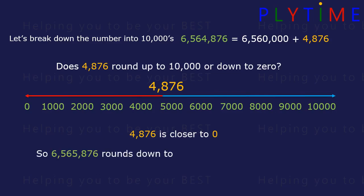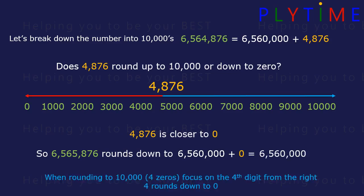So this number rounds down to 6,560,000 plus zero or 6,560,000. When we're rounding to 10,000 with four zeros we focus on the fourth digit from the right. Here the 4, and 4 rounds down to zero.